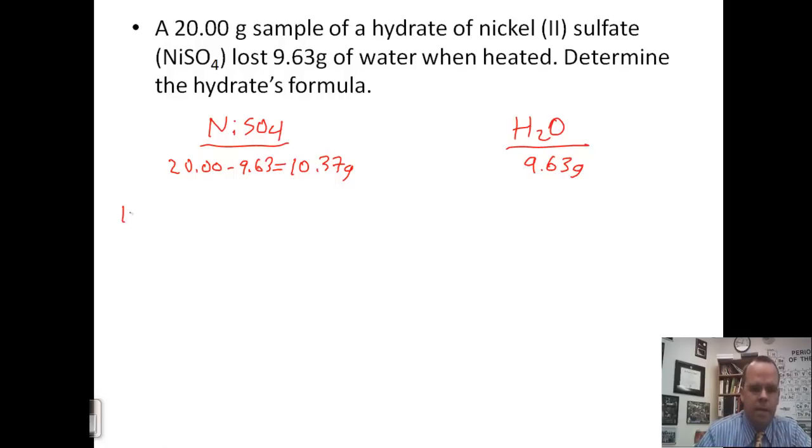Our first step is to change into moles. One mole, take the molar mass of nickel sulfate, which is 154.76 grams. So I added Ni, 58.69, S, 32.07, and 4 oxygens, 16 each, and came up with 154.76. When I do that, I get 0.06701.